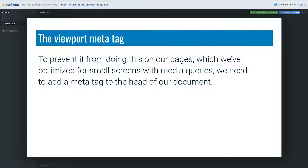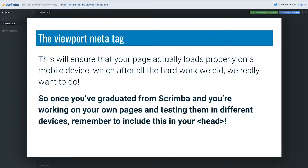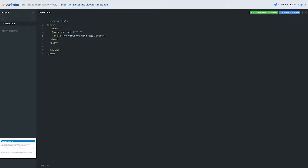To prevent this from happening on pages we've optimized for small screens with media queries, we need to add a meta tag to the head of our document. There are a lot of different attributes we can add, but the basic meta tag you'll use will look exactly like this. It can be added anywhere in the head of the document and will make sure the page actually loads properly on mobile devices — which, after all the hard work we did, we really want. I already have a meta tag up here, so I'll go right after that and paste it in right there.